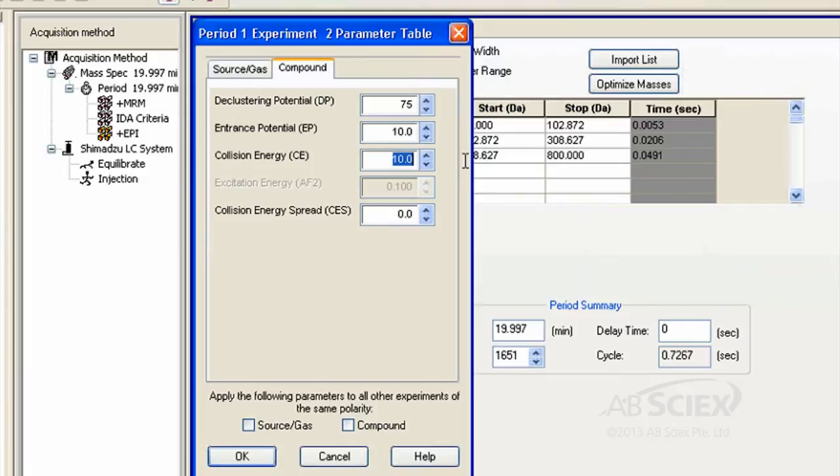We recommend the collision energy of 35 volts with an energy spread of 15 volts. This just means that three different collision energies will be used for fragmentation to give a more comprehensive MS-MS spectrum.